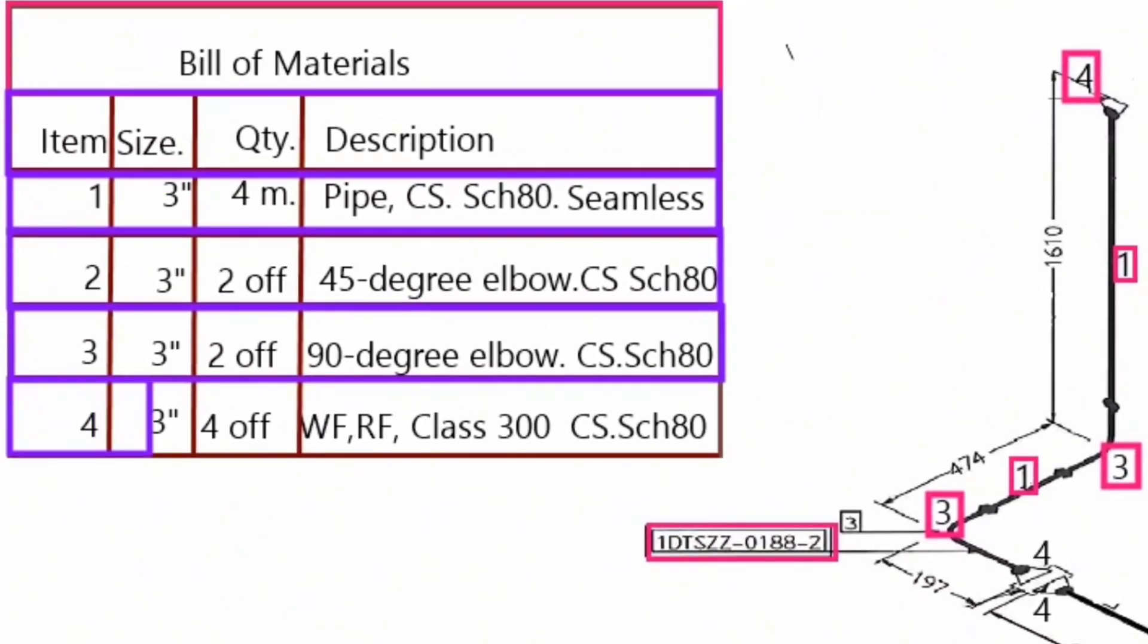Item number 4, size is 3 inch, the quantity are four pieces weld neck flange, raised face, class 300, carbon steel material, schedule 80.